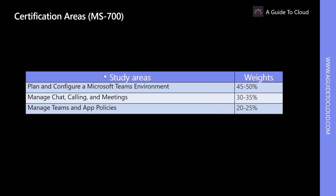MS700 includes three study areas as shown in the table. The percentages indicate the weight of each area on the exam — the higher the percentage, the more questions you are likely to see on that area.